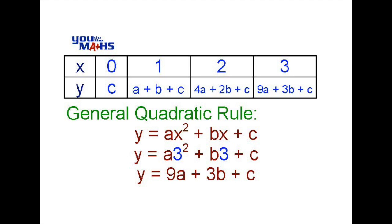So all of the y values that we can see in our table have come about by putting values for x of 0, 1, 2 and 3 into the general rule.